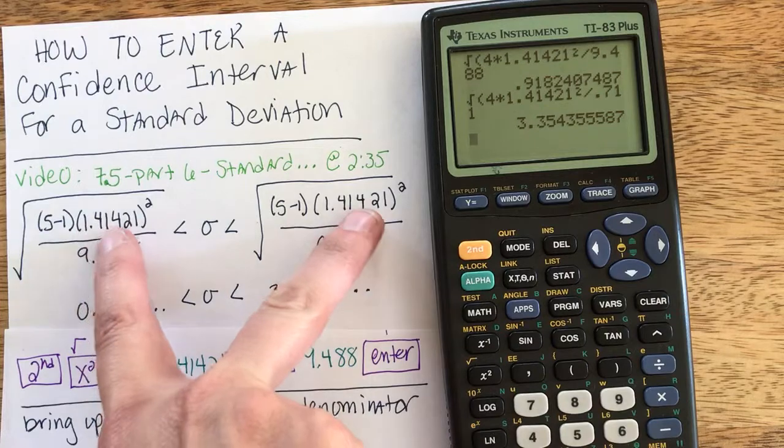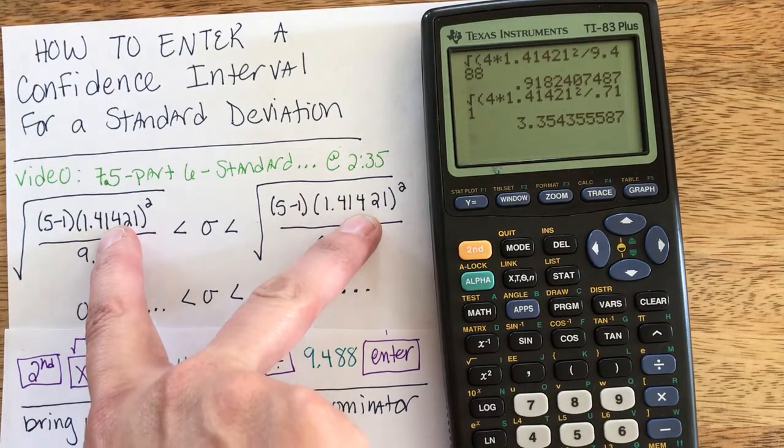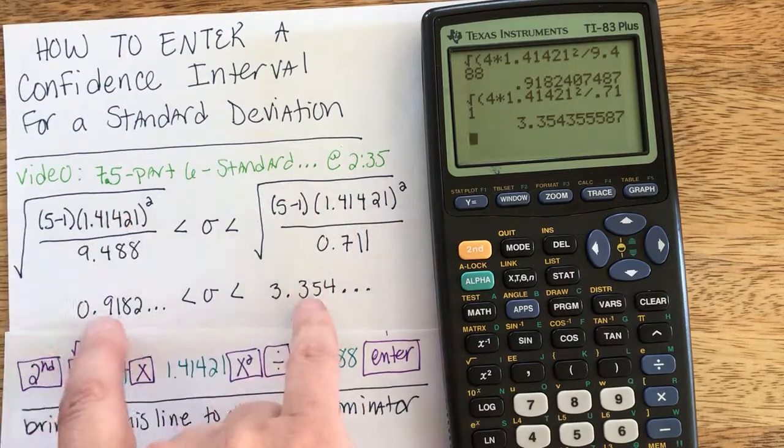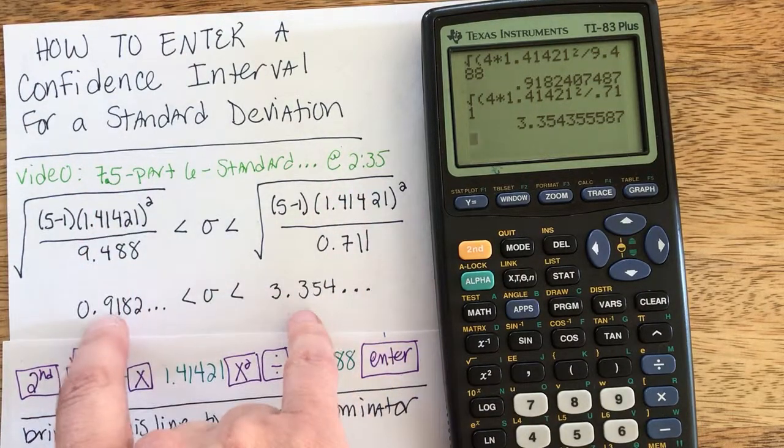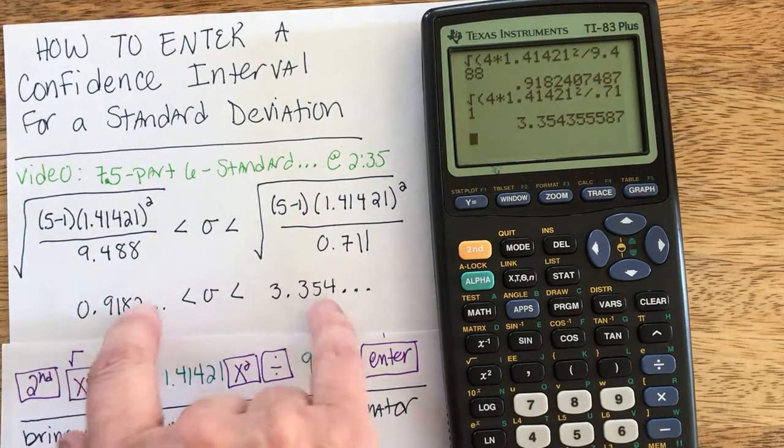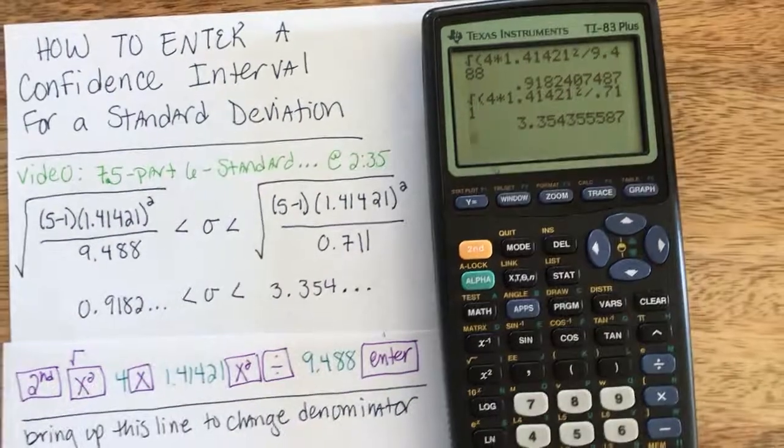And remember, this s sample standard deviation value of 1.4 should be within the range of your answer. Because 1.4 is within these two lower and upper bound numbers, I'm pretty confident I've done this correctly.